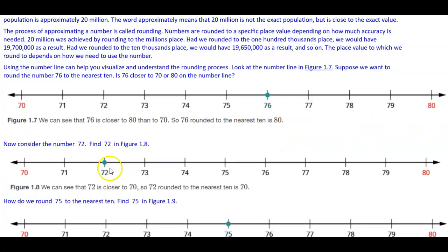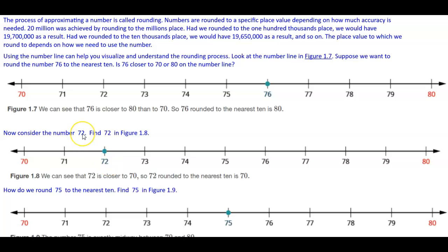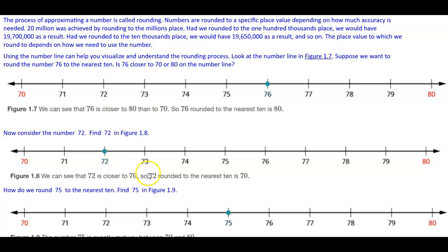Now let's consider the number 72. If we find 72 in the figure, we can see that 72 is closer to 70. So therefore, 72 rounded to the nearest 10 is 70.